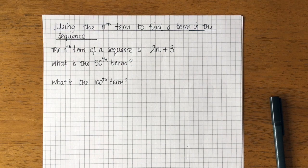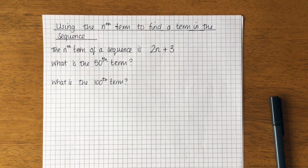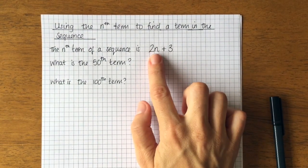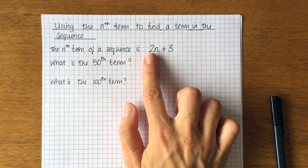We're going to use our knowledge of last lesson on substitution to help us. So this is the nth term. It tells us the nth term of a sequence is 2n plus 3.